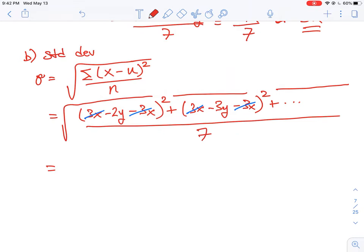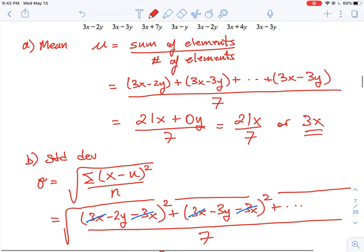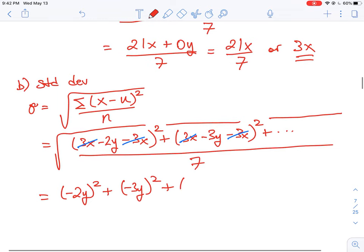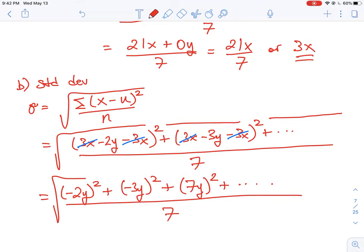All we're actually doing is squaring the y term in each case. So this is going to end up being (-2y)² + (-3y)² plus the next term, which is 7y squared, and so on until we run out of terms again, and we're dividing all that by 7, and again carrying the square root sign down.